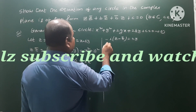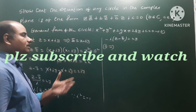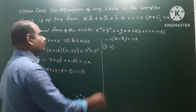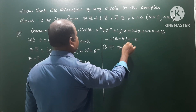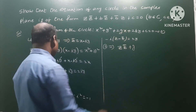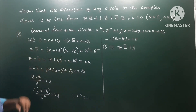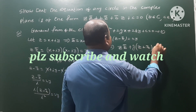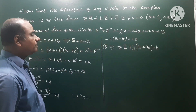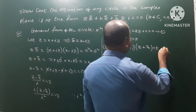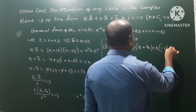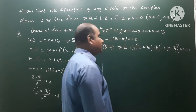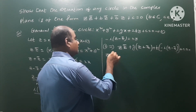Therefore substituting into equation 1: x² + y² is z·z̄; the term 2gx is g·(z + z̄); and the term 2fy is f·(−i)·(z − z̄), which equals −if·(z − z̄). Plus c = 0.